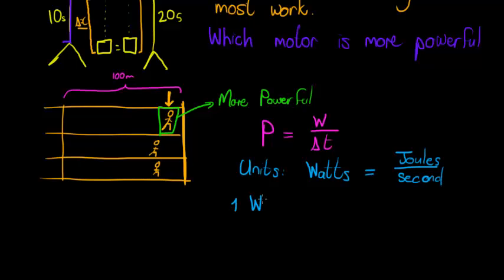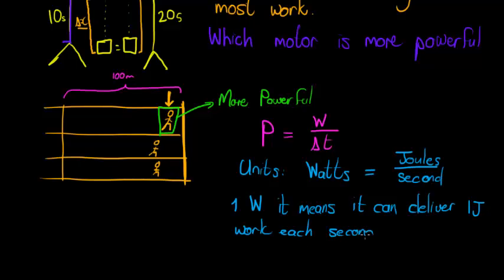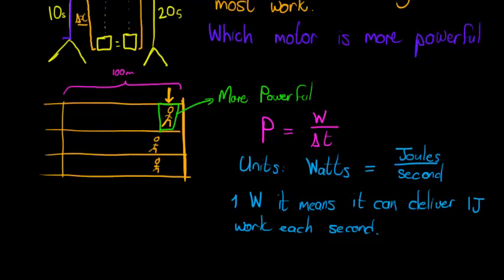So if I say I've got one watt of power, it means, or a motor has one watt of power, it can deliver one joule of work each second. That's what one watt means.